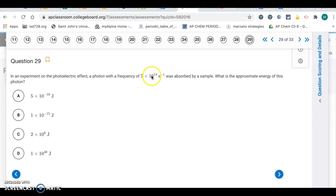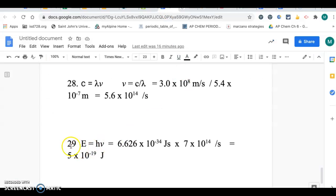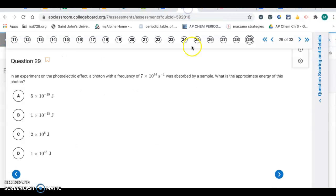Question 29. Now we have a frequency of 7 times 10 to the 14th. We want to find the energy. Going back to the work page. Energy is Planck's constant times frequency. By the way, these equations are on your green sheet and the constants for the speed of light and Planck's constant. We multiply those two together and you get 5 times 10 to the negative 19th joules. Letter A, 5 times 10 to the negative 19th.